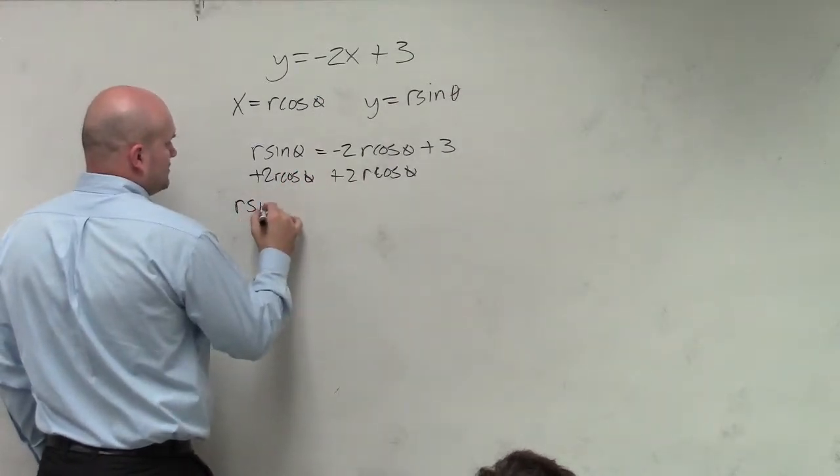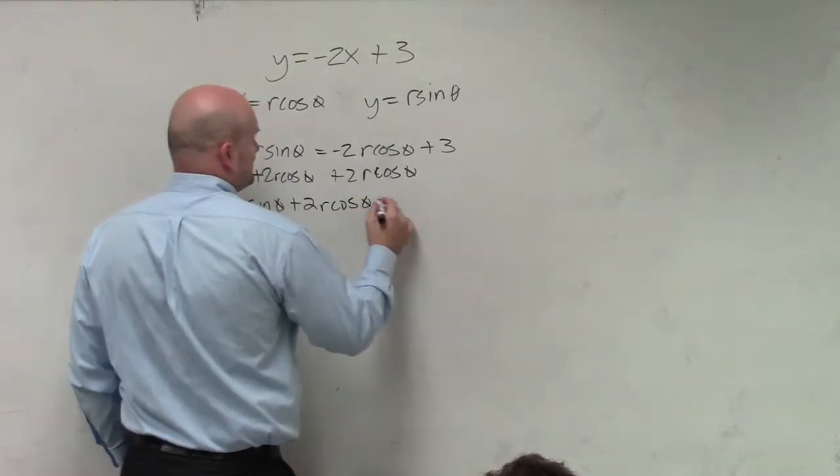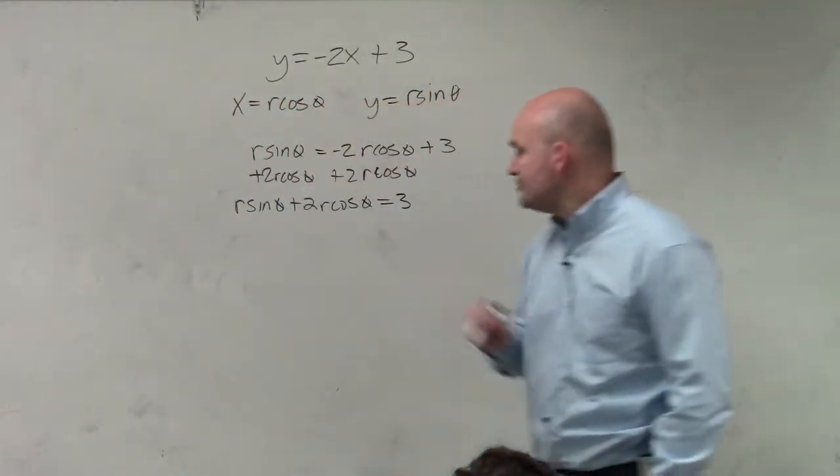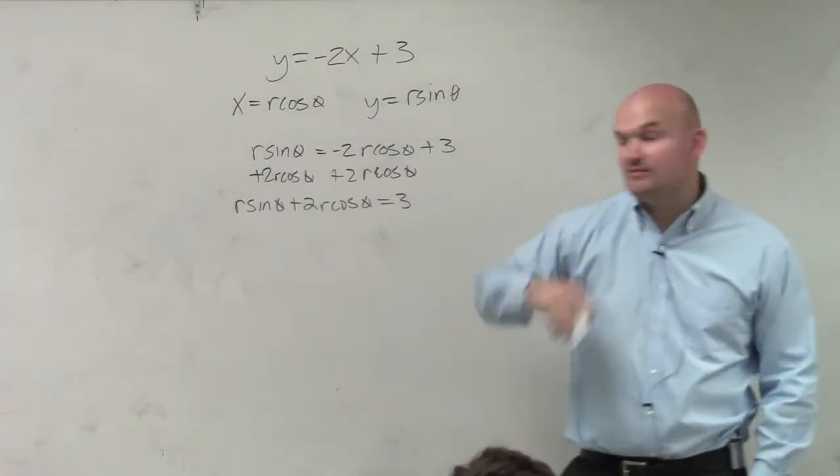So therefore, we have r sine of theta plus 2 r cosine of theta equals 3. But guys, remember we need to solve for r. We can't combine them because they're not like terms. So we can factor out an r.